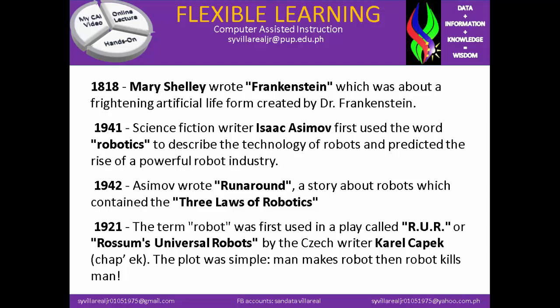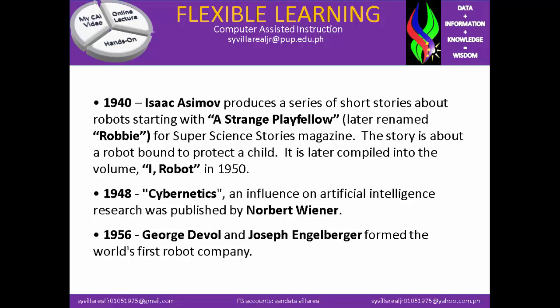In 1942, Asimov wrote Runaround, a story about robots which contained the three laws of robotics. In 1921, the term robot was first used in a play called R.U.R., or Rossum's Universal Robots, by the Czech writer Karel Capek. The plot was simple: man makes a robot, then robot kills man. In 1940, Isaac Asimov produces a series of short stories about robots, starting with a strange playfellow, later renamed Robby, for Super Science Stories magazine. The stories were about a robot bound to protect a child, later compiled into the volume I, Robot in 1950.